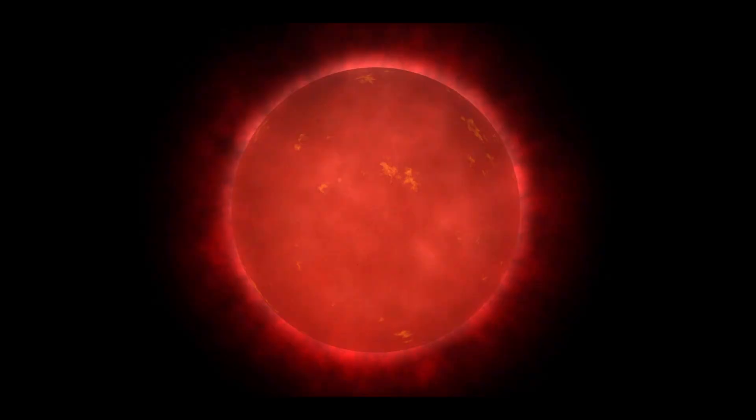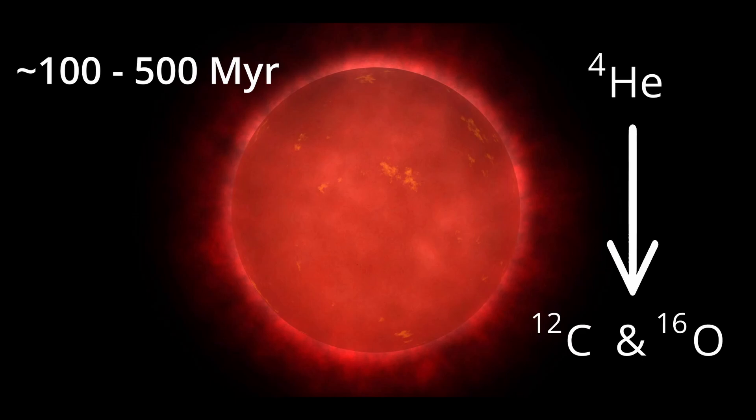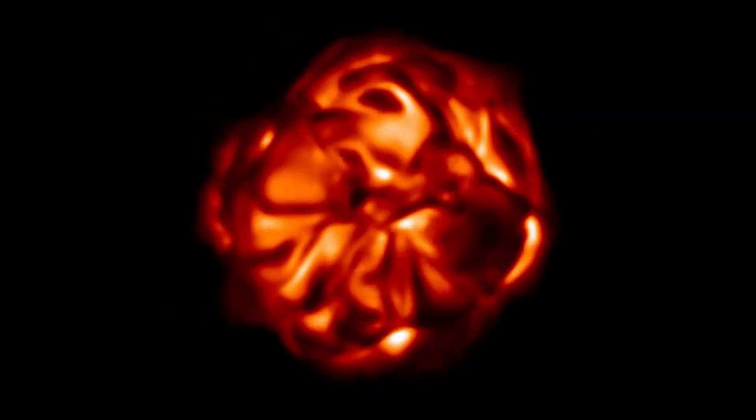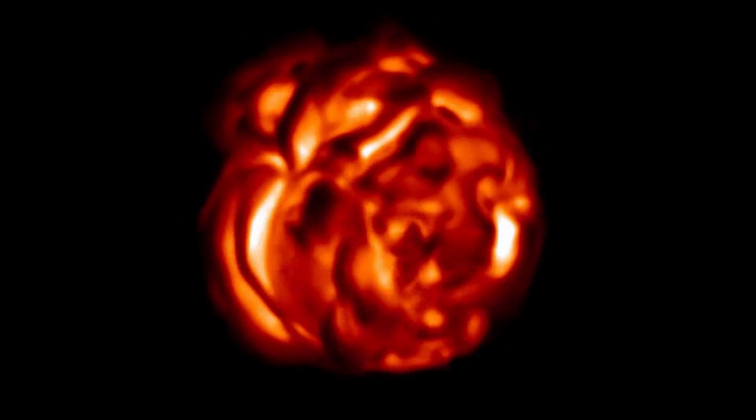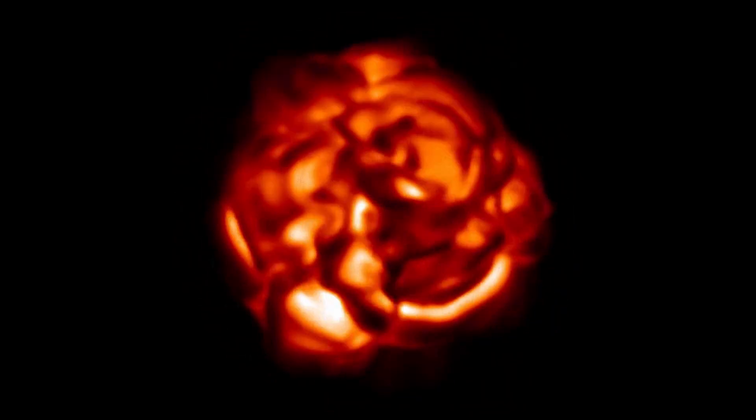Red giants will continue to burn for a further few hundred million years, fusing helium into carbon and later on oxygen, with both of them slowly building up in the core. Instability in the rate of helium fusion and sudden pressure changes in the core combine as the leading reasons for thermal pulses plaguing the outer layers of a red giant.